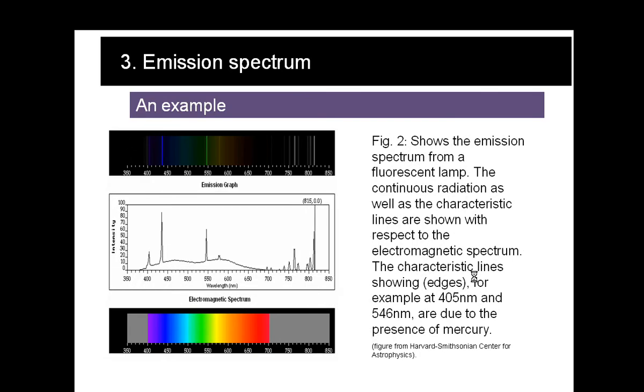This is an example of an emission spectrum where we have a fluorescent lamp irradiated, and we can see the edges, the characteristic lines showing the wavelengths where we had emission.